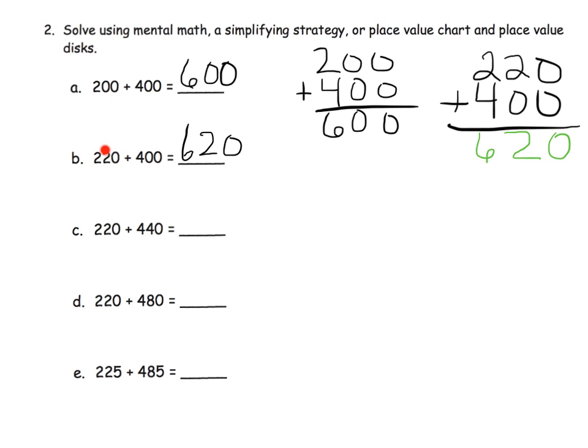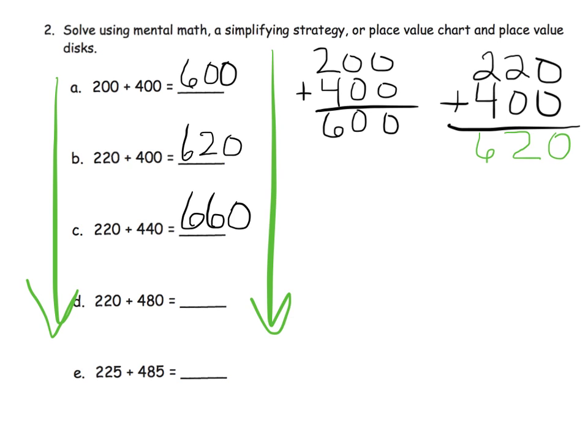Going from problem B to problem C — the 220 stays the same, but the 400 got bigger by 40 to become 440. So our answer gets bigger by 40, bumping us up to 660. Students can not only get practice using the vertical standard algorithm, but they can also see a really cool pattern as we move down from problem to problem.